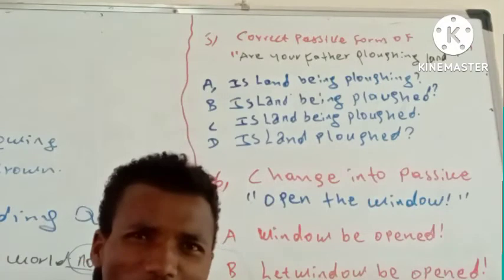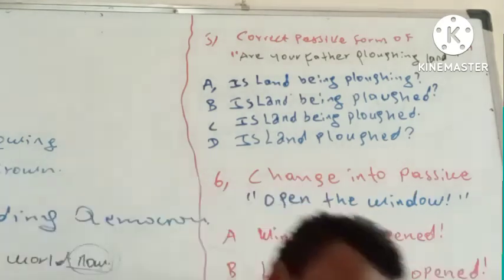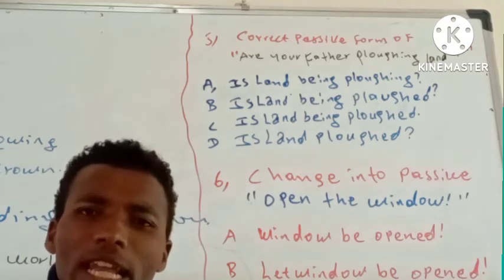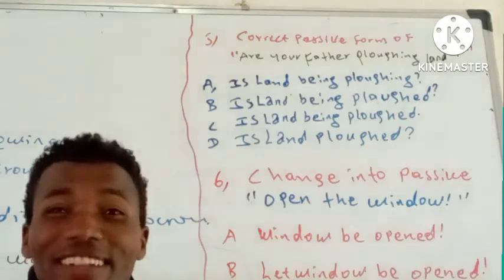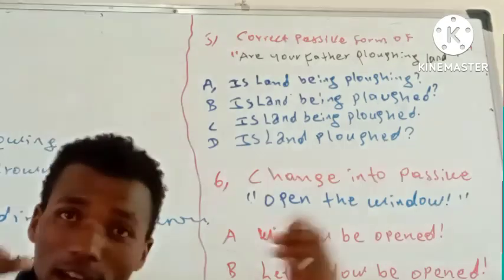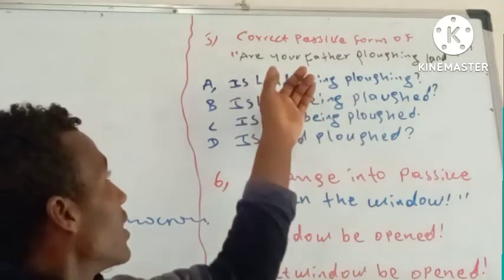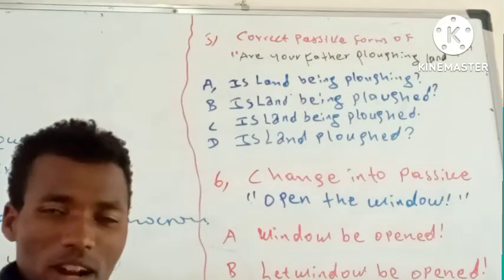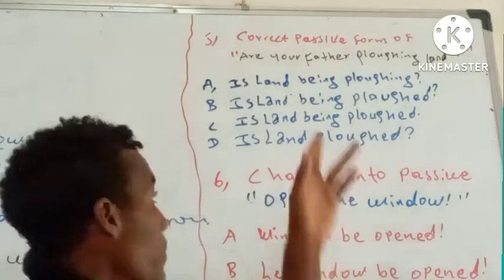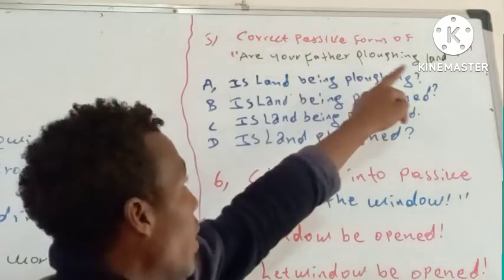The object here is 'land.' Since we have an object, there is a possibility of forming the passive. The object 'land' becomes the subject in the passive form. Using auxiliary and passive formula, the structure is: auxiliary plus 'being' plus past participle.